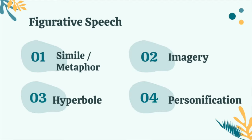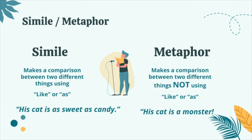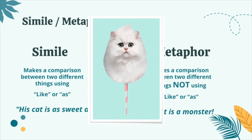Today we're gonna talk about two types of figurative language: simile and metaphor, and actually try to solve a MAP reading question. First up, simile — coming from the Latin word 'similis,' which means similar or like. Similes compare two things using 'like' or 'as.' For example, 'His cat is as sweet as candy,' which probably means his cat is really nice and well-behaved.